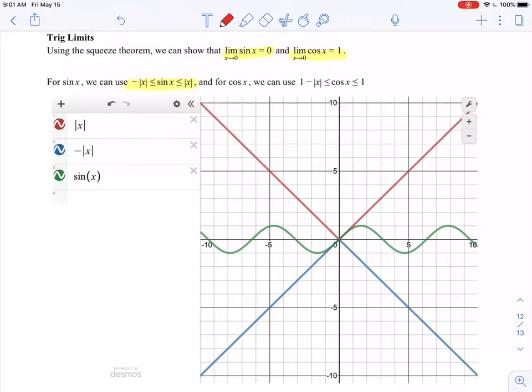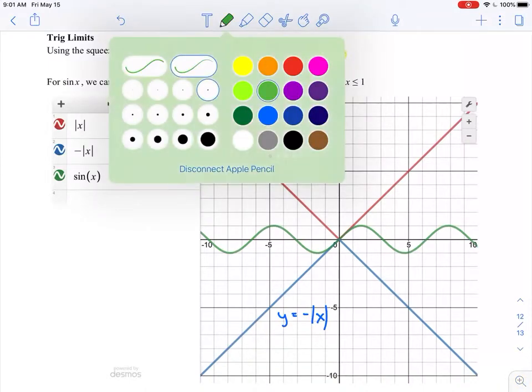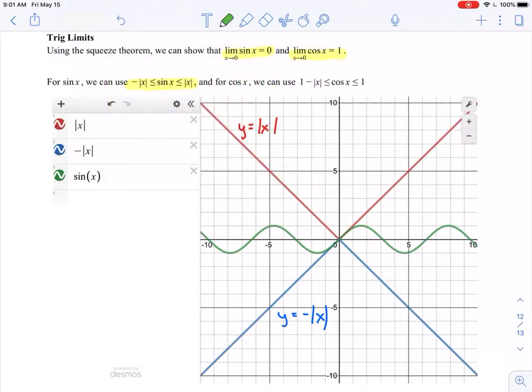For this, remember we need that lower function and an upper function. So I've shown the squeeze theorem for sine of x here, where sine of x is stuck between negative absolute value of x and positive absolute value of x. This red line is y equals absolute value of x, that's my upper function. My lower function is y equals negative absolute value of x, and that green oscillating function in the middle is y equals sine of x.